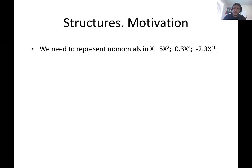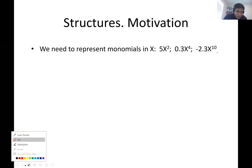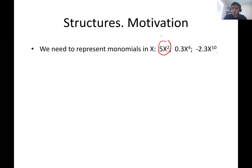Another motivation for structures: assume we want to write a math library to deal with monomials. A monomial is a number multiplied by x to some power — like 5x squared. The problem is a monomial has two different elements: the coefficient and the power. Although you can assume the power is an int type, the coefficient is generally a floating point or double — for example, 0.3 or negative 2.3. These are two different elements of different types.